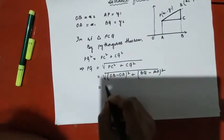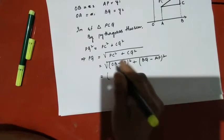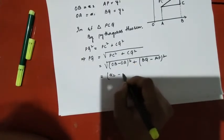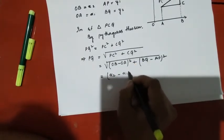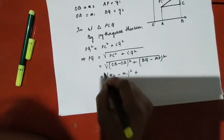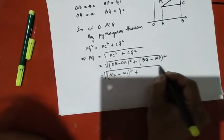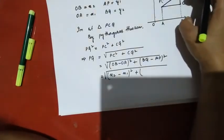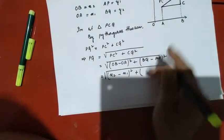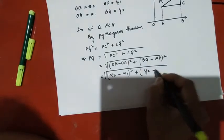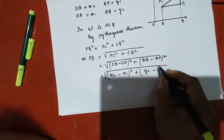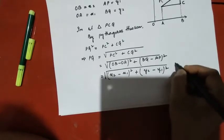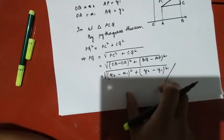OB equals X2, OA equals X1, whole square plus Y2 minus Y1 whole square. This gives us the distance formula between any two points using coordinate geometry.